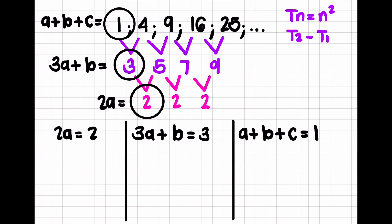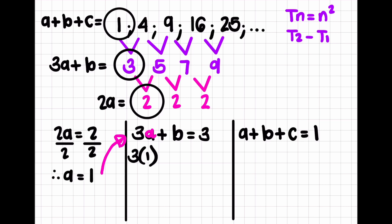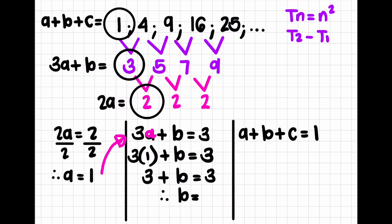We have a, b, and c, so we have to solve for a, use a to solve for b, and use b to solve for c. So if 2a equals 2, I divide both sides by 2, and therefore a is equal to 1. Now I take that a value of 1 and substitute it into the next equation: 3 times 1 plus b equals 3, which gives me 3 plus b equals 3. To isolate b, I take the 3 across, so b equals 3 minus 3, which is 0.